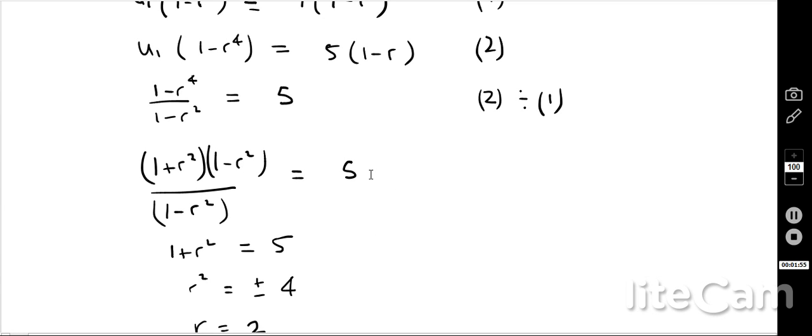Okay, now I've got that. Well, there's a few ways of trying to solve this equation. One way would be to use your graphics calculator. Another way is to notice that 1 minus r to the power of 4 can be factorised as 1 plus r squared and 1 minus r squared. And the reason we do that is because there's a 1 minus r squared on the bottom.